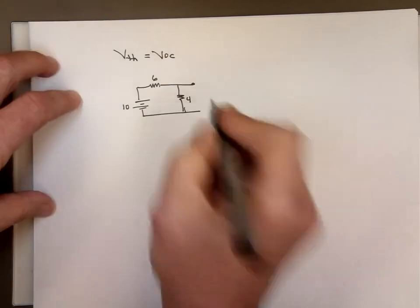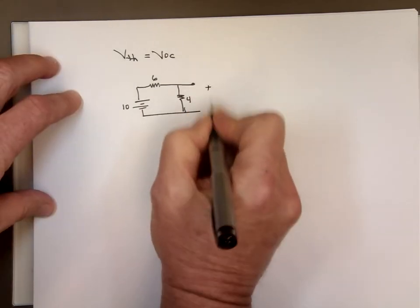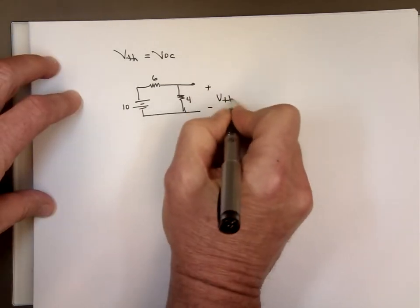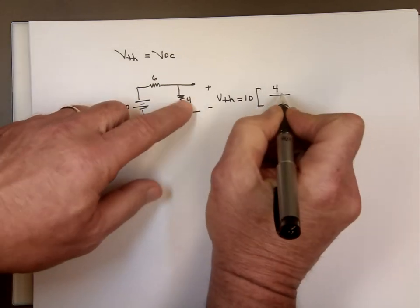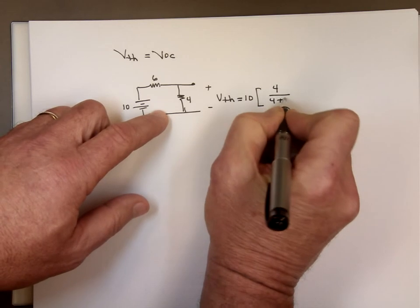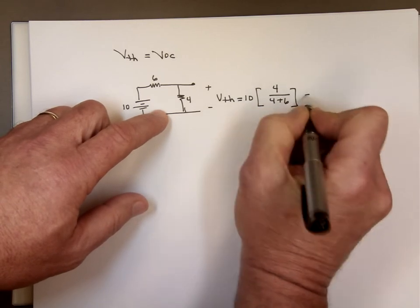So this is my V thevenin right here, equals 10 times 4 divided by the sum of them, voltage division, which gives me 4 volts.